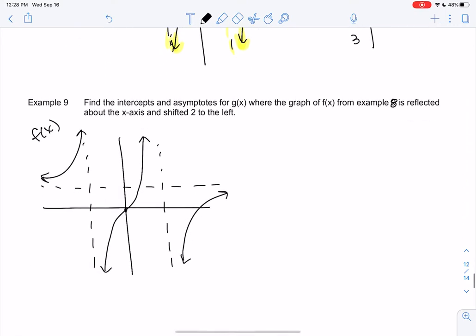So I'm just going to mark the zeros. We had (0,0). We had (5,0). We had asymptotes at 2 and negative 2.